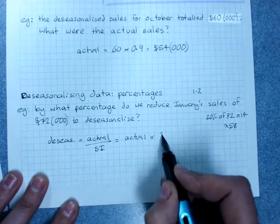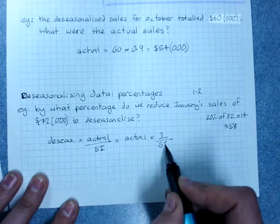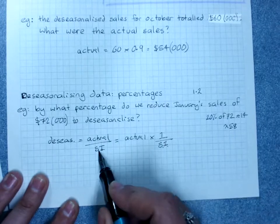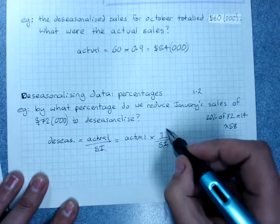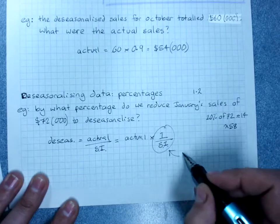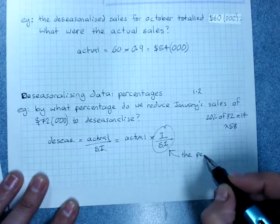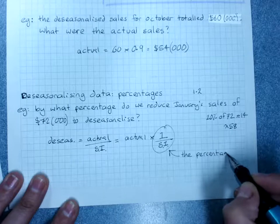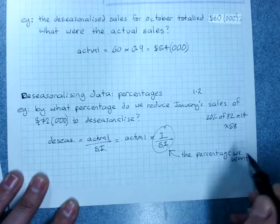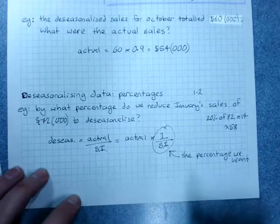And if we look at a fraction like this, well that actually means the actual times 1 over the seasonal index. And this - this is the percentage we want.